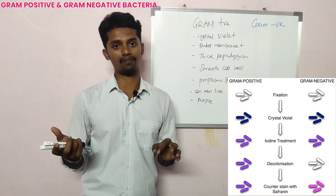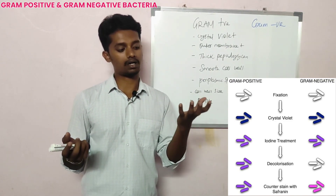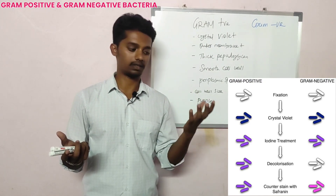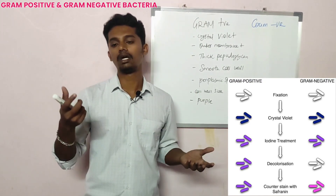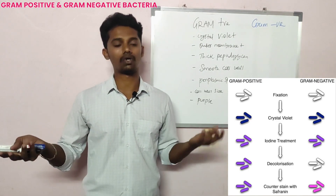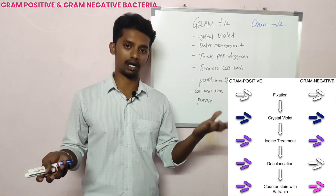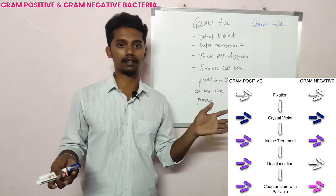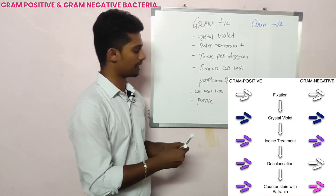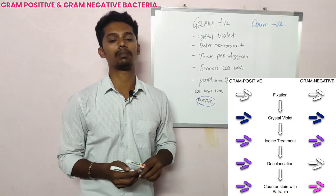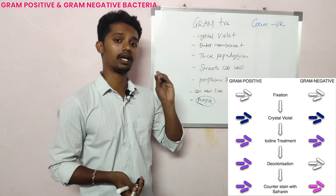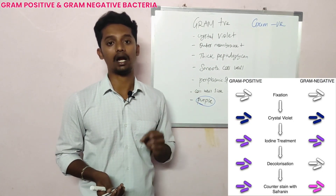Now we will add a decolorizing agent — alcohol. If you add the decolorizing agent to both gram positive and gram negative, petri dish A (gram positive) retains its color, while petri dish B (gram negative) loses the color due to the decolorizer. That is why gram positive remains purple. At the end of the experiment, gram positive will appear purple under the microscope.